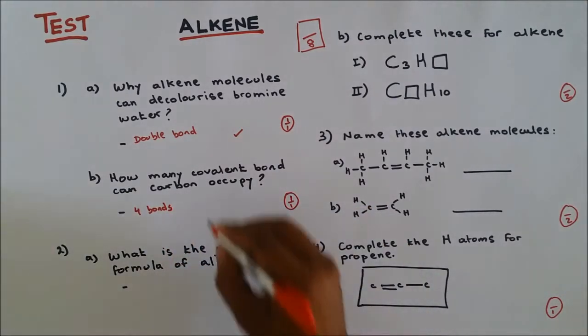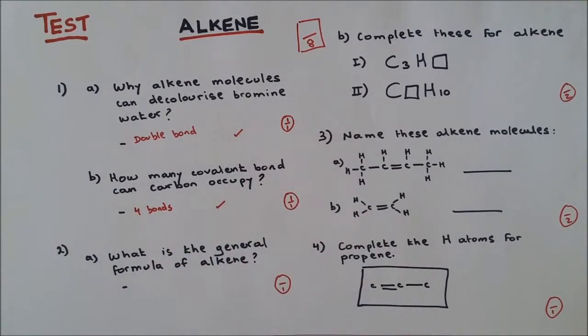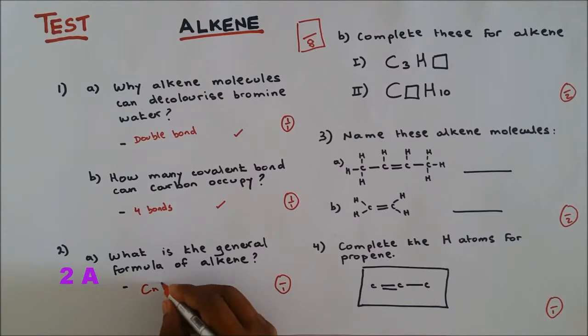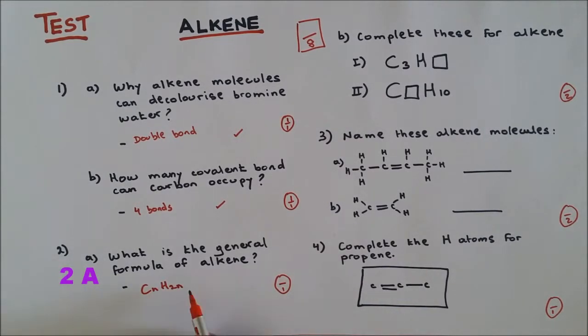Question number 2a: What is the general formula of alkene? The general formula of alkene is CnH2n. We leave it like that. If we put plus two, that's for alkane, but for alkene we just leave it as 2n.